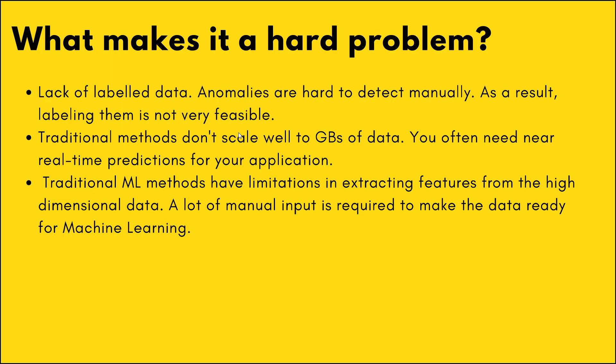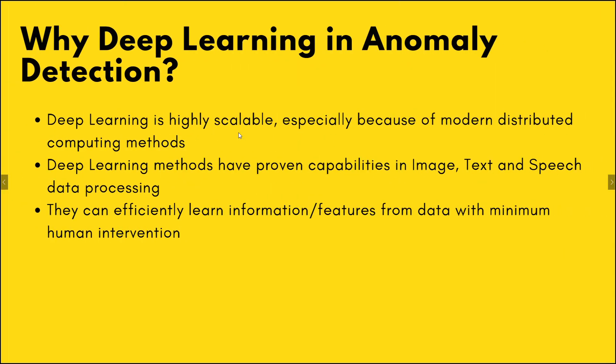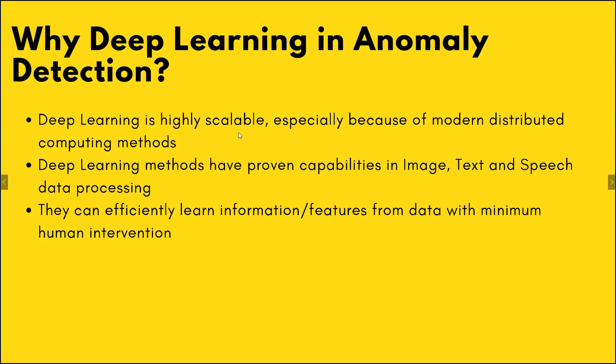Traditional machine learning methods have limitations in extracting information, and often manual intervention is needed to engineer the data for your machine learning model. Why deep learning? Firstly, because deep learning is highly scalable if you use correct distributed computing methods. Deep learning has proven capabilities in image, text, and speech data processing, and can efficiently learn information without a lot of human intervention.